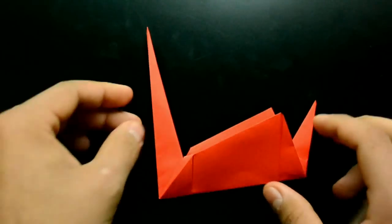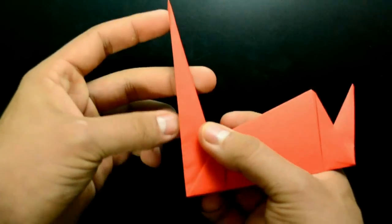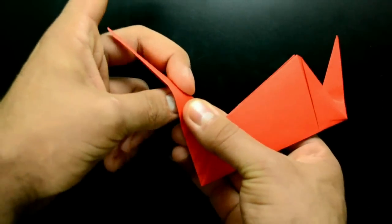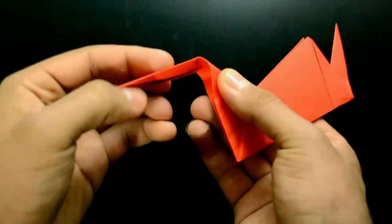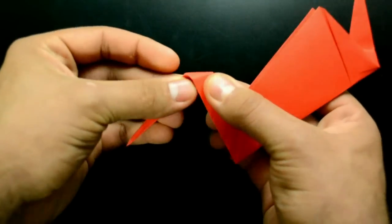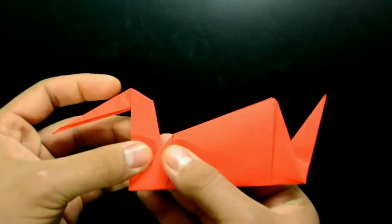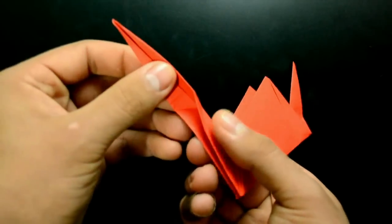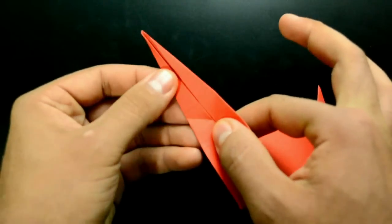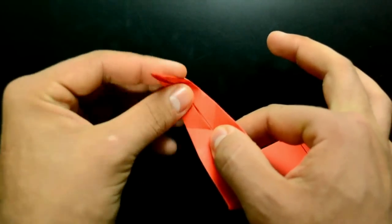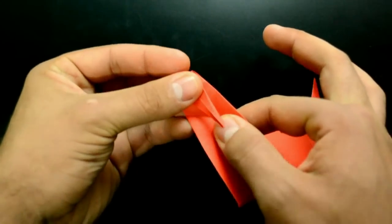To make the head, we need to fold, making a reverse fold in the neck. Almost the middle. Unfold. And fold this tip to here.